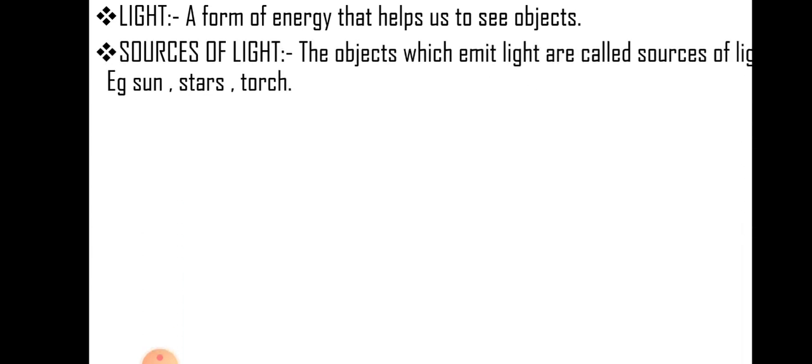There are many sources of light. The objects which emit light are called the sources of light. For example, sun, stars and torch are natural sources.